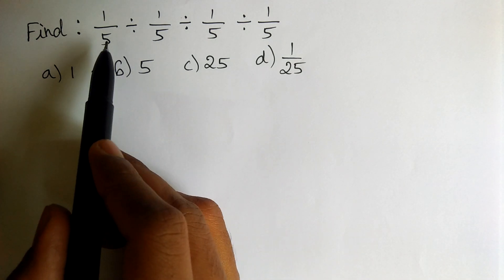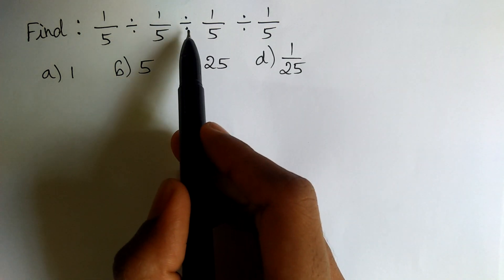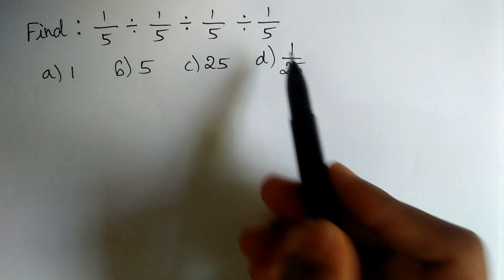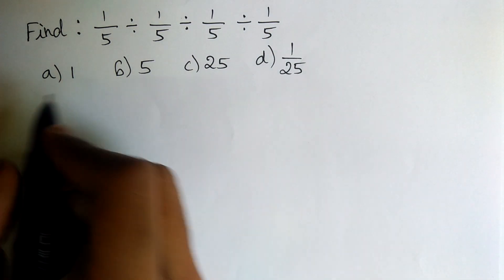We need to find the value of 1 by 5 divided by 1 by 5 divided by 1 by 5 divided by 1 by 5. Here are the choices. We need to find the right one.